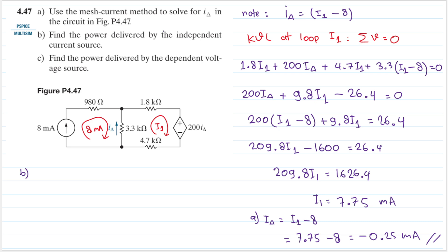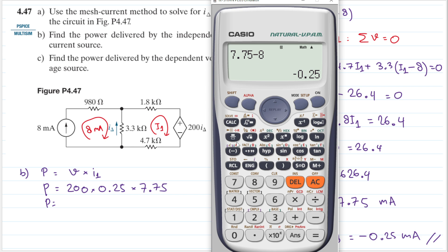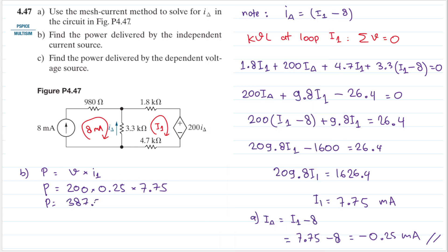For question b, we find the power delivered by the independent current source. The power equals voltage multiplied by current. The current is i1, which is 7.75 milliampere. The voltage across it is 200 i_delta, so 200 multiplied by 0.25 multiplied by 7.75 equals 387.5 milliwatt.